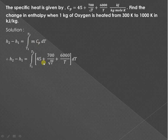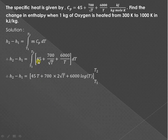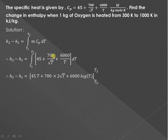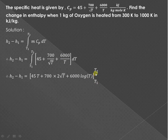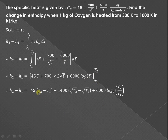The value of cp is written over here. Now let us integrate with respect to T. Integration of 45·dT is 45T. Integration of 1/√T is 2√T, multiplied by 700. Integration of 1/T is log T, multiplied by 6000. The limits are from T1 to T2.